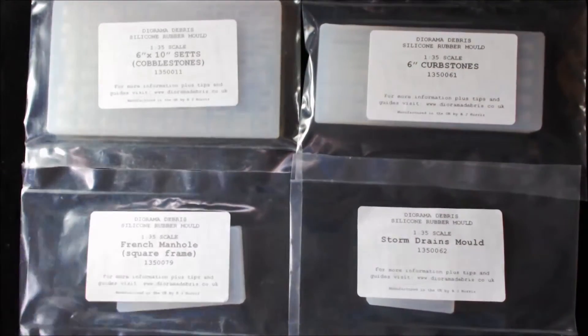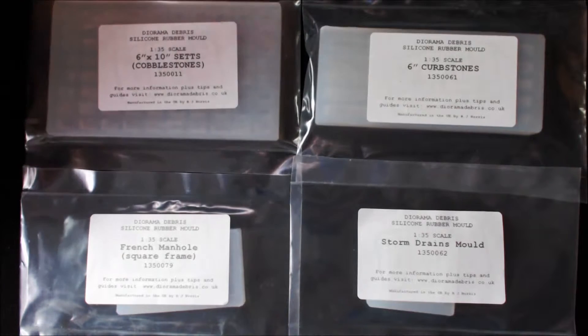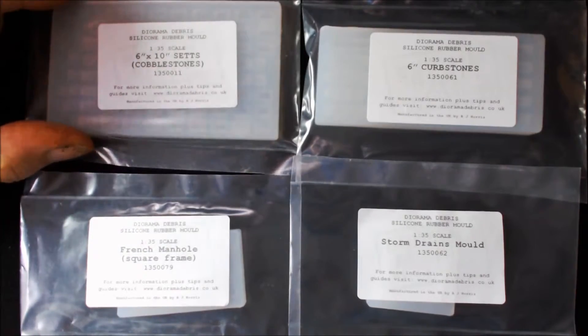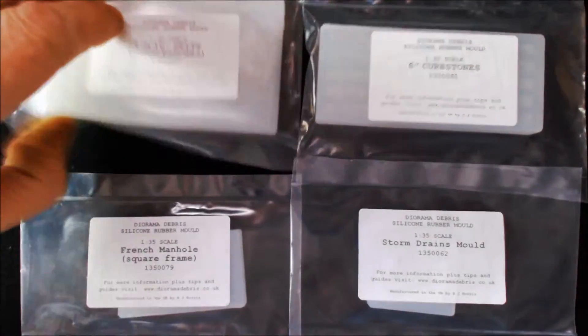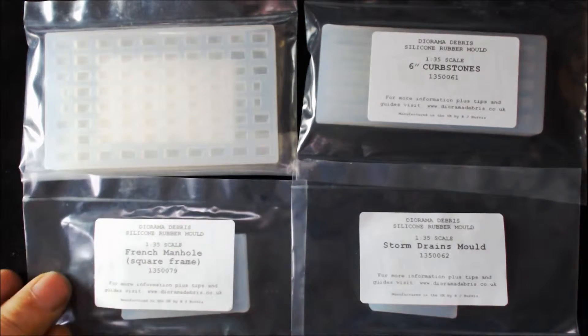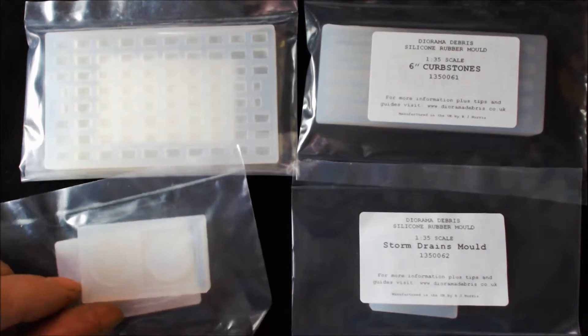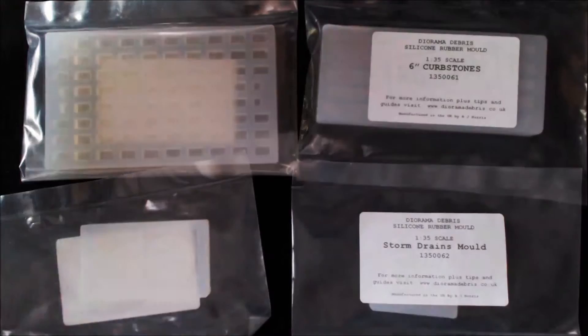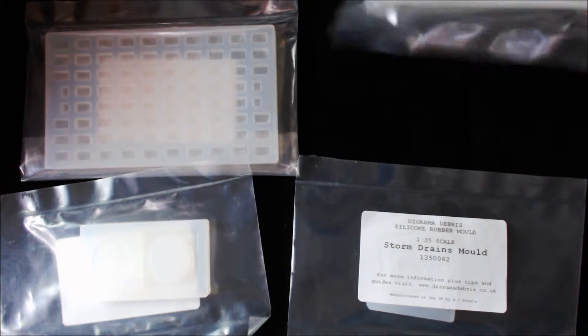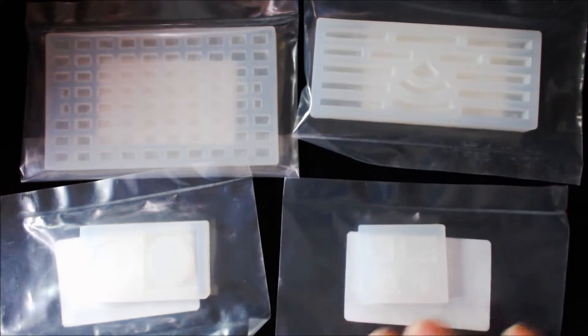Right, these are the four molds in question to start off with. We've got the 6 by 10 cobblestones, then we've got the French-made manhole and frame. I know you can't see much from that distance, but I will drop down and we'll have a closer look. This is the cobblestone curved edgings, and the final one is storm drains.